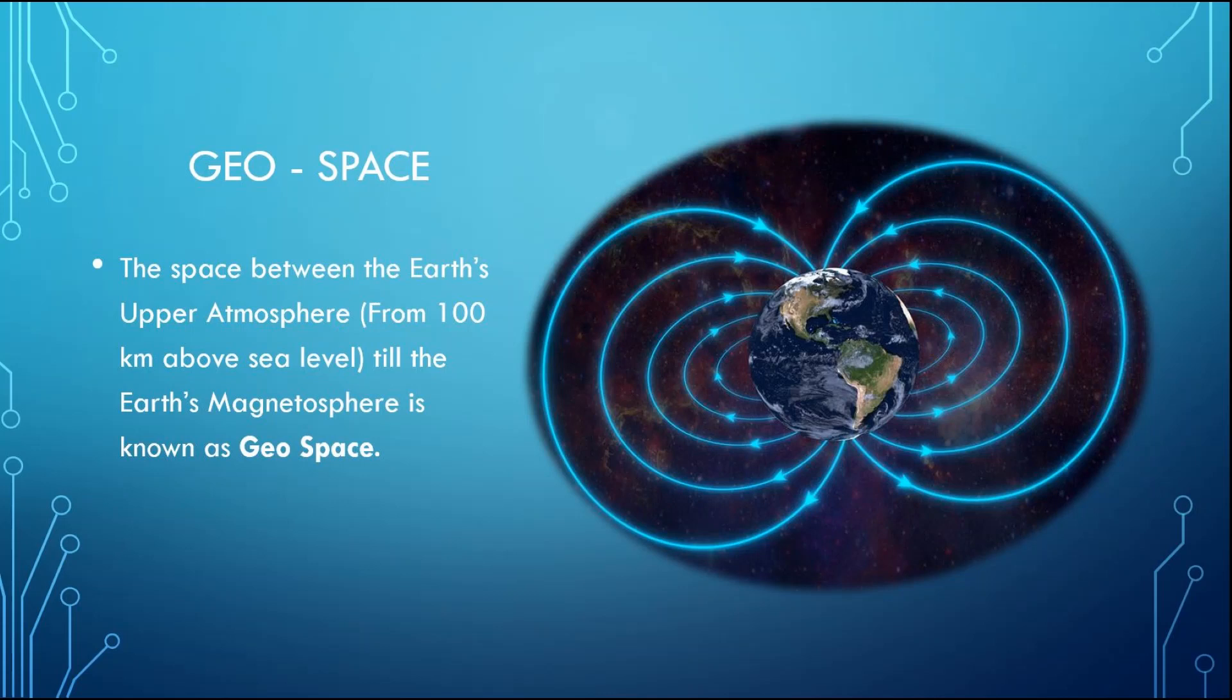Geospace: The space between the Earth's upper atmosphere till the Earth's magnetosphere is known as geospace. The Earth's upper atmosphere starts from 100 km above sea level. Here, outer space starts but the Earth's atmosphere is still left but it becomes very thin.